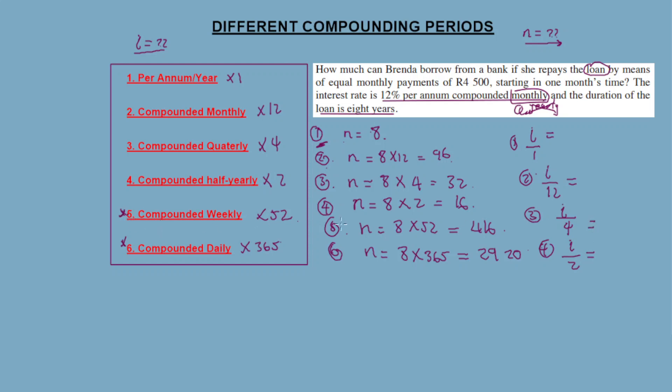For weekly, we divide by 52. And for daily, we divide by 365. So this is how you deal with the different compounding periods.